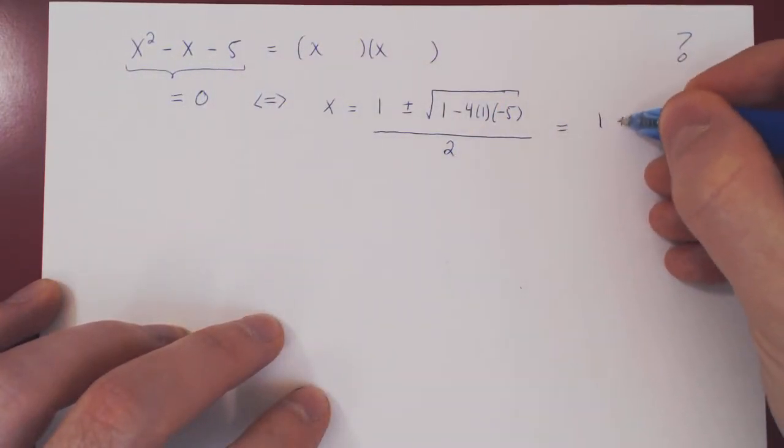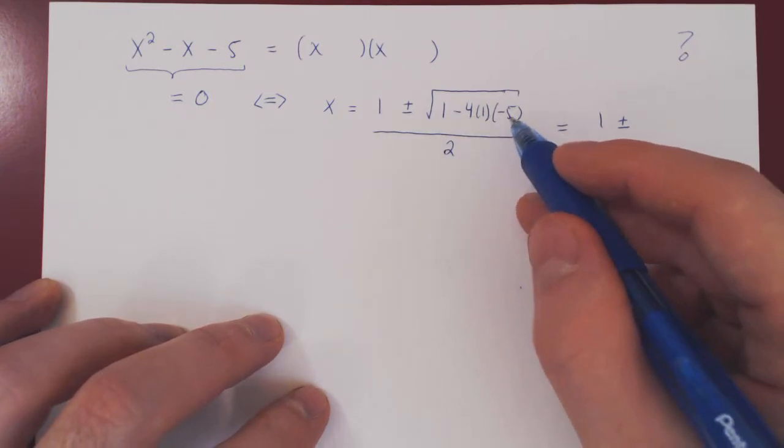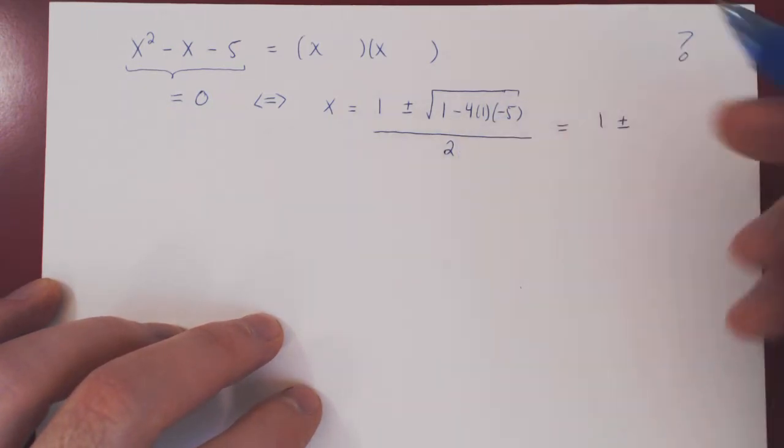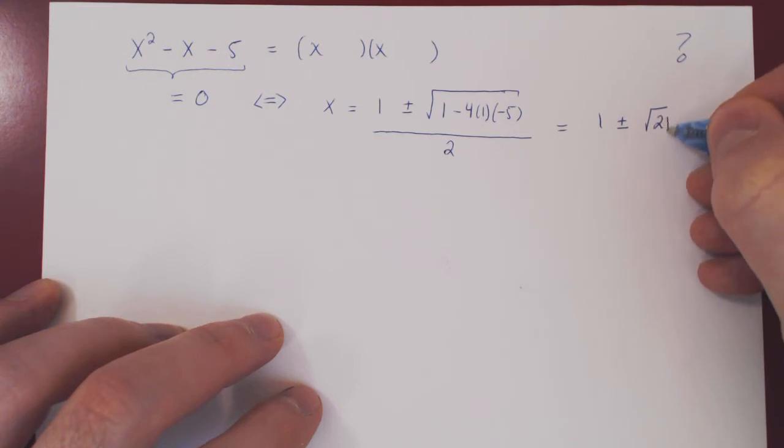If we simplify, we'll get 1 plus or minus, negative 4 times 1 times negative 5 is positive 20, plus 1, 21. So, the root of 21 over 2.